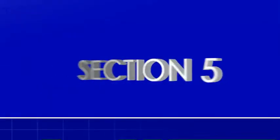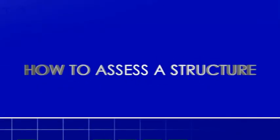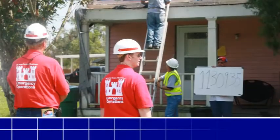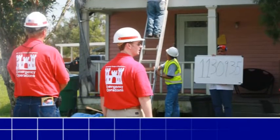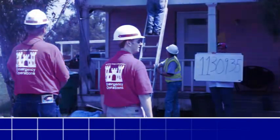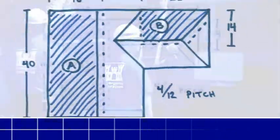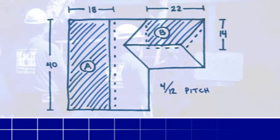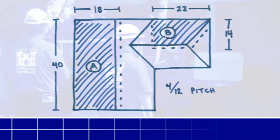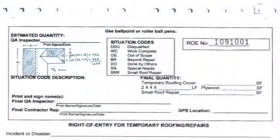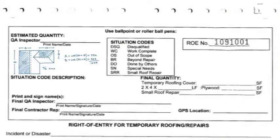Section 5: How to Assess a Structure. In order to provide an accurate representation of the roof and define your estimate, you must start with a good drawing of the footprint of the house. This drawing will be made in the blank space of the upper block of the ROE form.